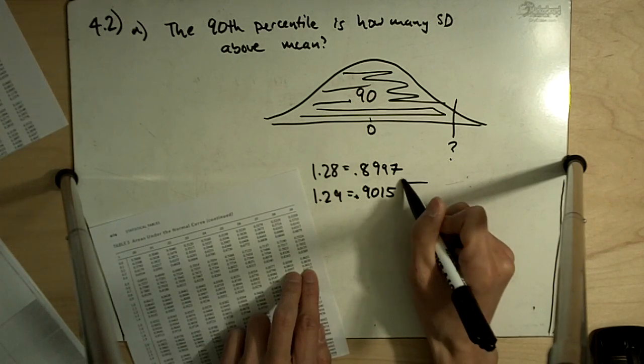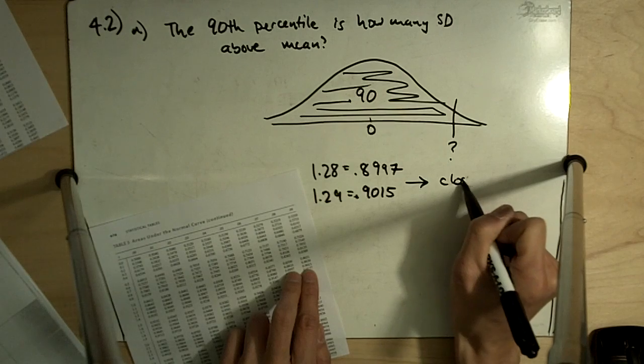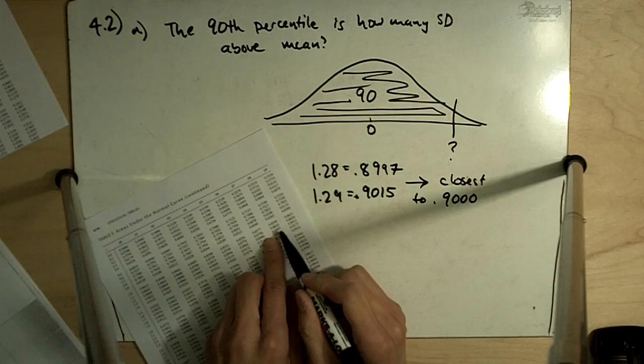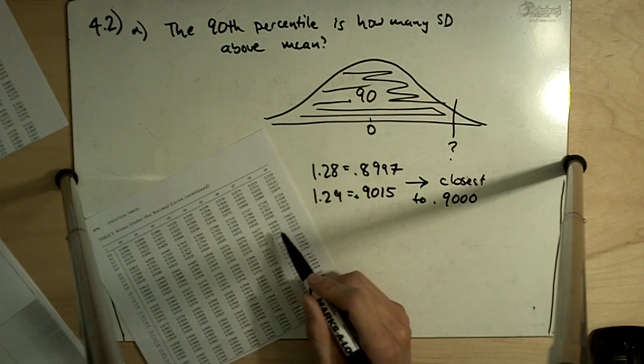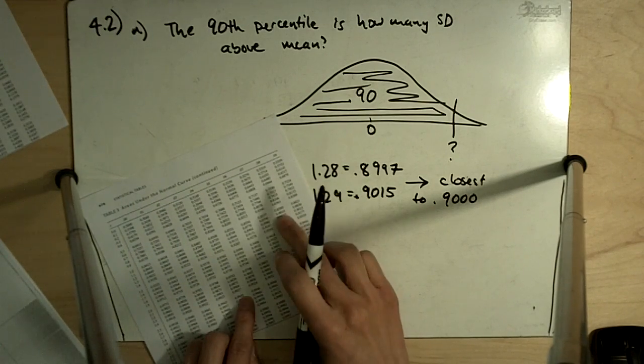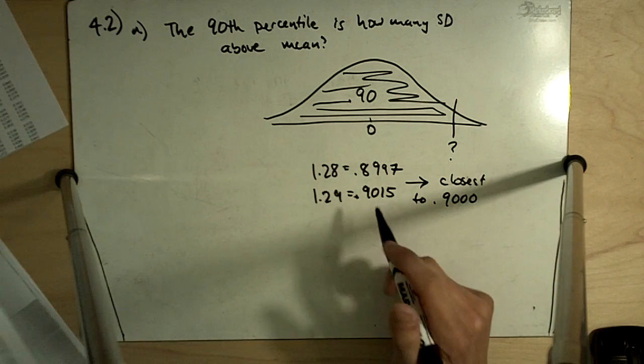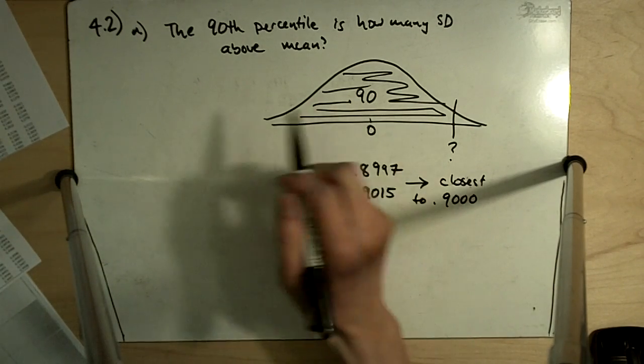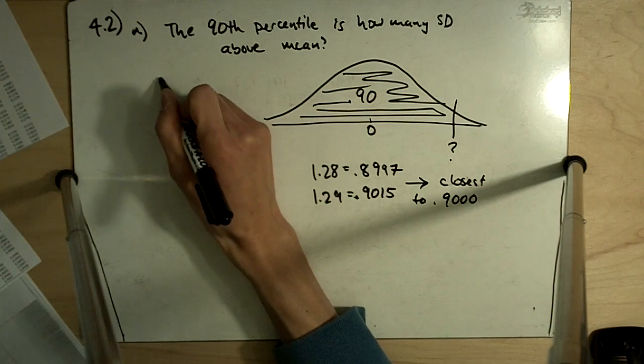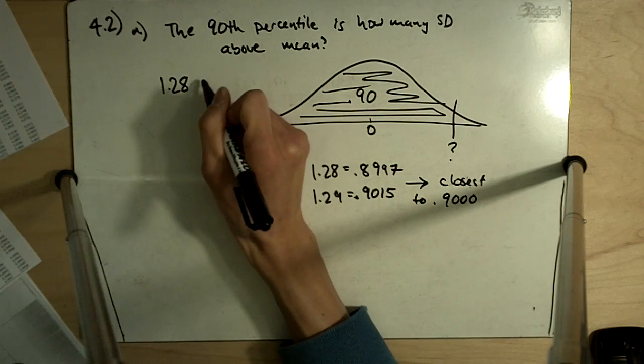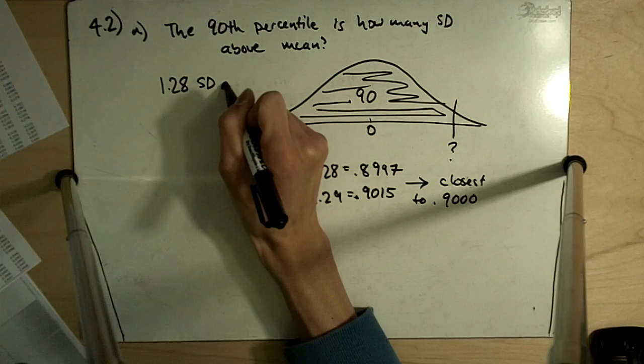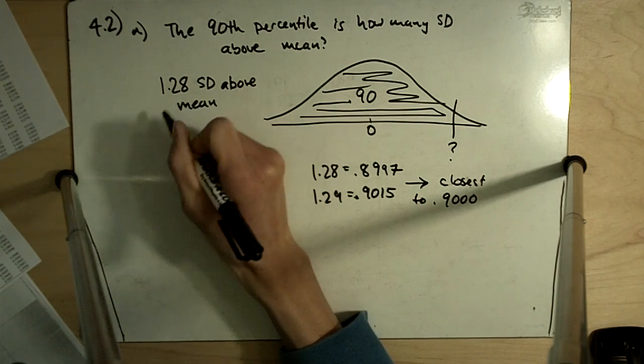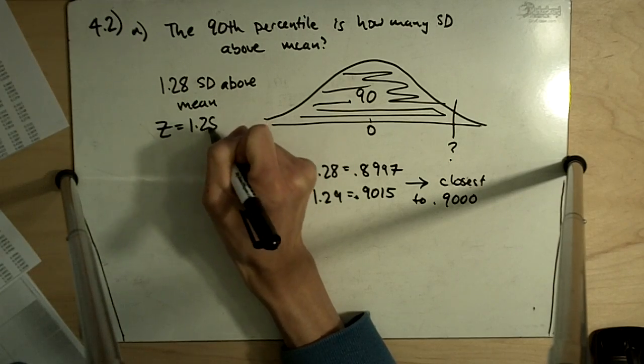These are the closest to 0.900 I can find in the table. Between the two numbers, 1.28 is closer, so the answer will be 1.28 standard deviations above the mean. Basically Z is equal to 1.28.